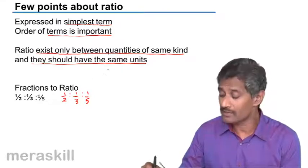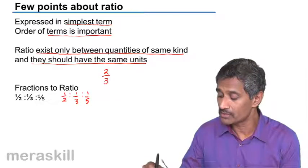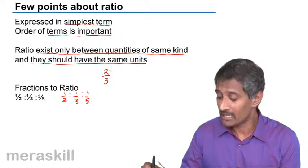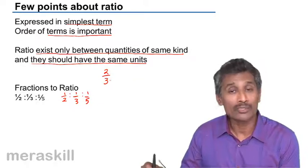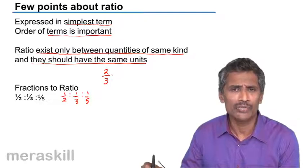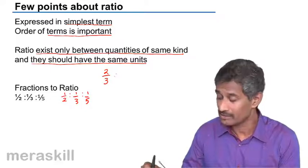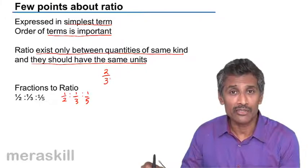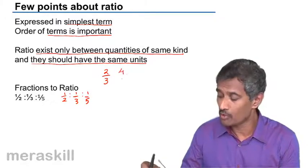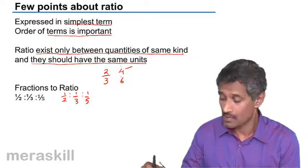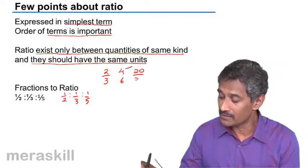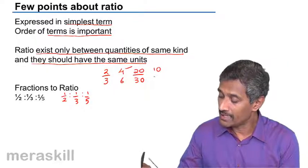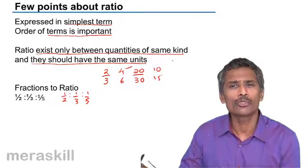Suppose you say the ratio of two things is 2 is to 3. Now people have a tendency to take that one quantity is 2 and the other quantity is 3, although somewhere down the line everybody knows that's not fine. But you need to check yourself, because if the two quantities are in the ratio 2 is to 3, they could be 4 and 6, or they could be 20 and 30, or they could be 10 and 15.